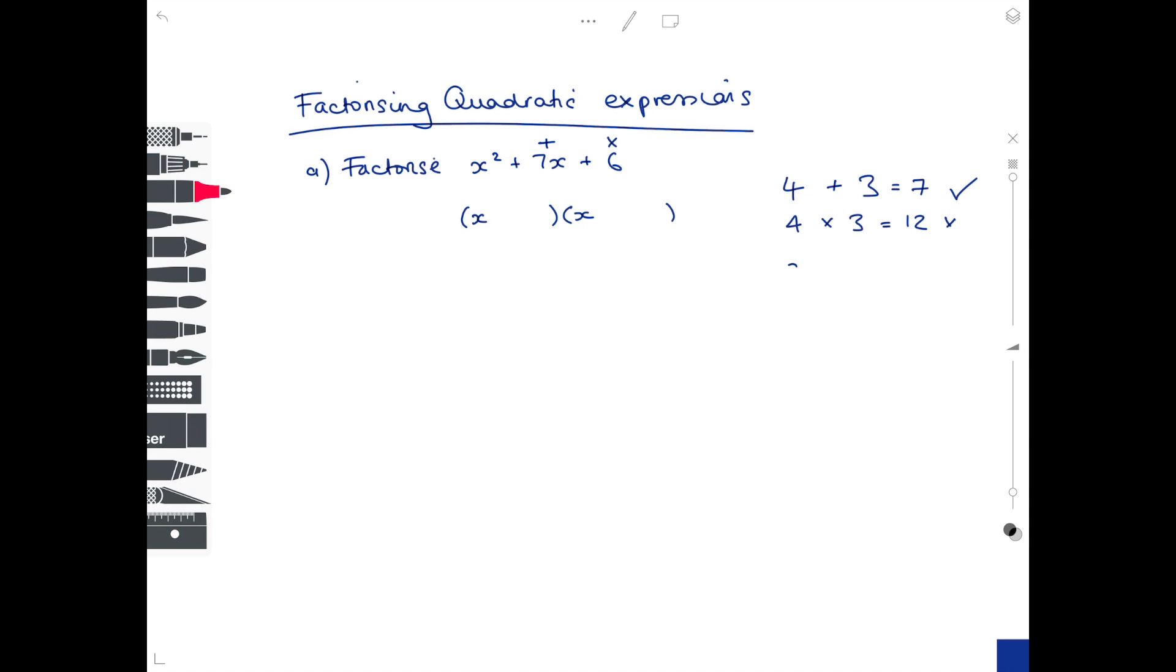Now let's try 6 and 1. So 6 and 1 add together to make 7, which is good, and they multiply together to make 6, which is also good. So we've found our two values, and then we can just substitute them in, and that is your final answer.